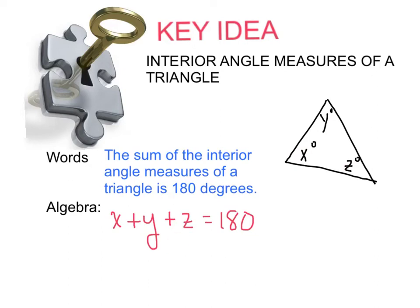Something else that you need to know is the algebra. How does that look? If you have angle measures of x degrees, y degrees, and z degrees, then if you add all three of them up, x plus y plus z equals 180 degrees. This is how you write an equation — you add up all three angles and set them equal to 180 degrees.